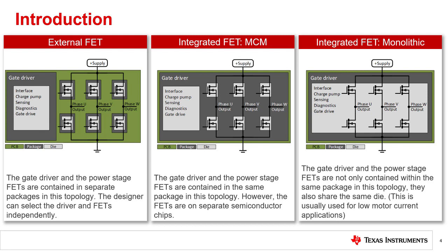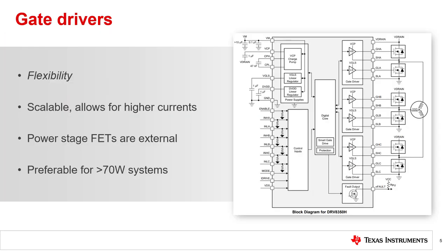Monolithic integrated drivers are most commonly used for low motor current applications. Gate drivers offer flexibility. At its core, a gate driver's purpose is to switch external FETs to control current flow through a motor. Selecting the FETs and motor are design choices that are less constrained when using this topology. Since the driver could be isolated well from its power stage, high voltage and high current applications are more attainable using these parts. As a rule of thumb, if a system will have an output of over 70 watts, it is suggested to use a gate driver.